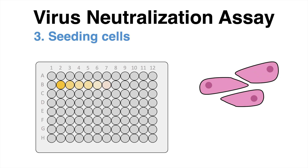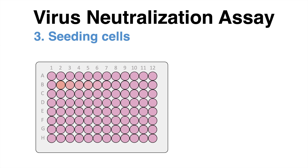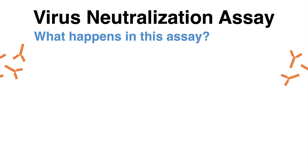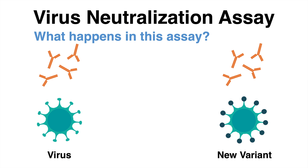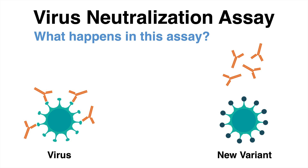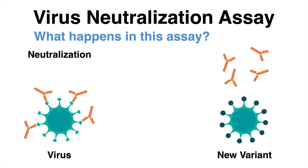Following that, it is time to add the cells. But what exactly happens inside the wells of that plate? During the time when the virus is incubated in serum, the antibodies might have a strong affinity for the surface proteins and bind to those — this process is called neutralization. In case of a new variant that has critical mutations with modifications of the surface proteins, the antibodies might not be specific enough to neutralize the virus.